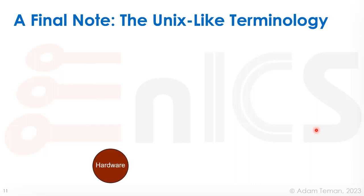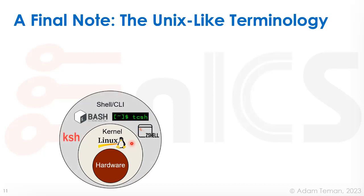Let's look at this graphically. We have our hardware — our CPU and devices — and on top of that we put the kernel. Linux is the kernel we use in our discussion. On top of the kernel we have the shell, or command line interface — a wrapper and API over the kernel for entering commands. The most popular one is bash, which is part of GNU. You also have KSH, TcShell, ZShell, and others.